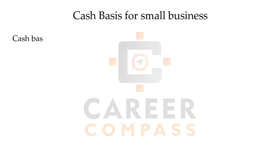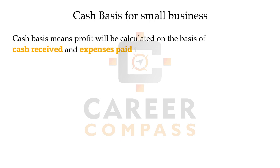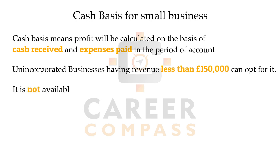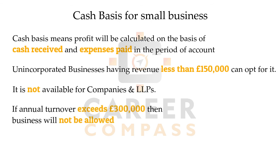The last concept is the cash basis of accounting. Under cash basis, income is recorded when received and expenses when actually paid. It is only available to unincorporated businesses with revenue below £150,000, and is not available to companies or LLPs. Once turnover exceeds £300,000, the business cannot opt for the cash basis. That concludes this chapter.